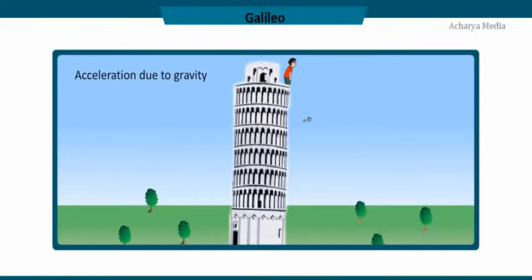Galileo was the first to state that all bodies at rest fall at the same velocity regardless of their material, weight, and volume. He dropped objects of different masses and sizes from the Leaning Tower of Pisa; from the same height, all reached the ground at the same time. This was due to the fact that air resistance is negligible for both objects.